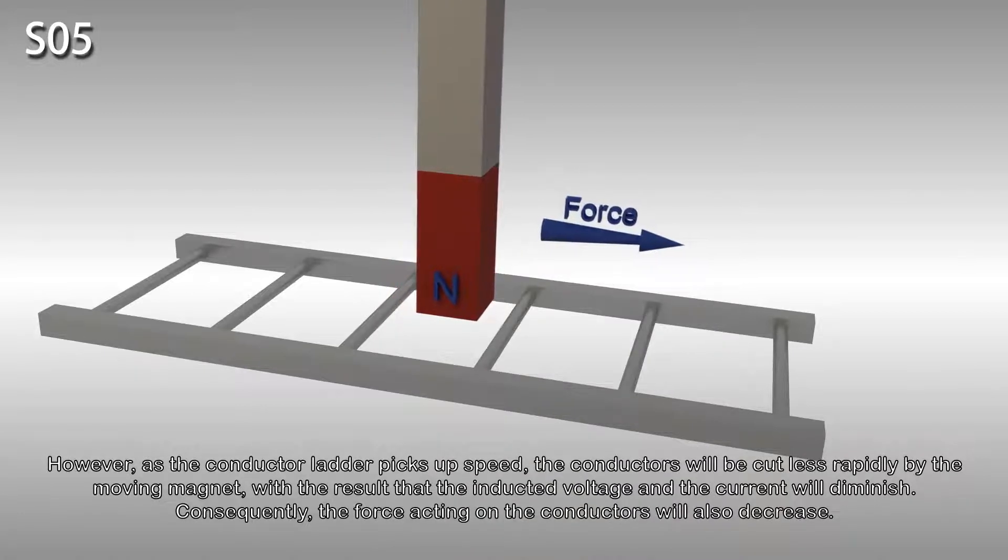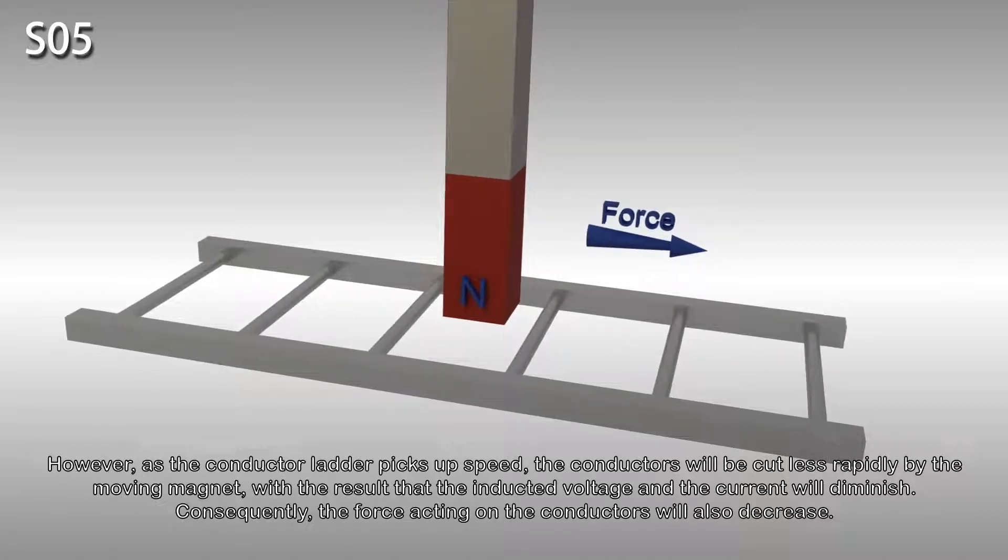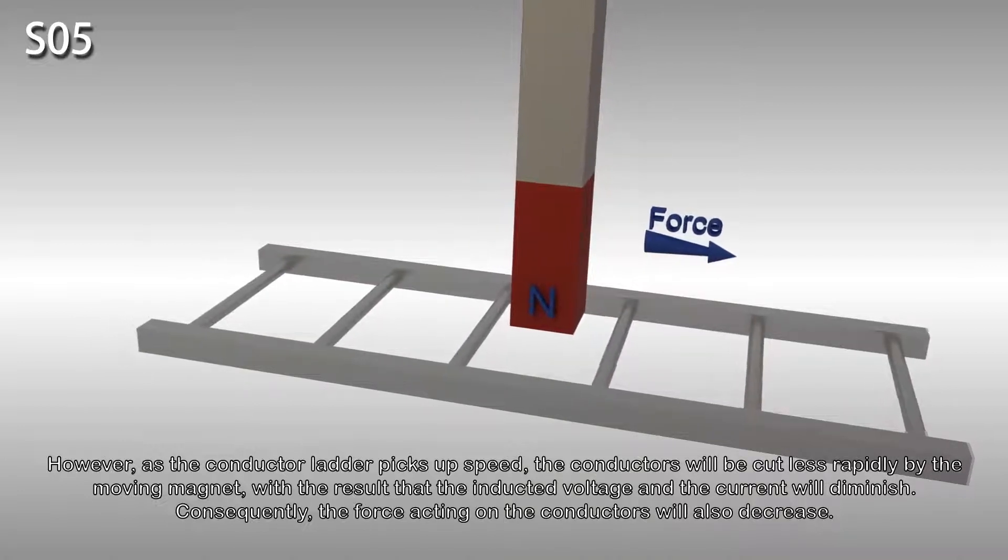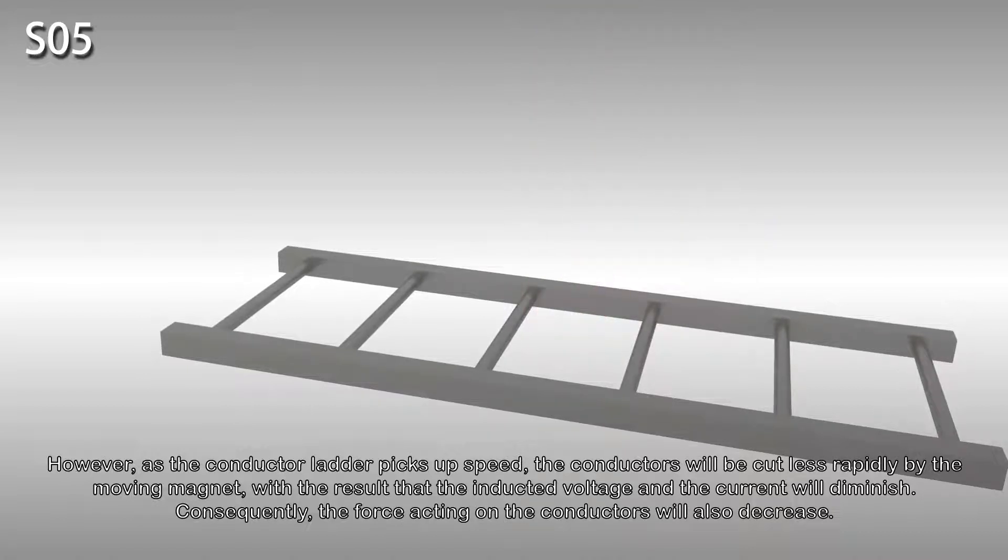However, as the conductor ladder picks up speed, the conductors will be cut less rapidly by the moving magnet, with the result that the induced voltage and the current will diminish. Consequently, the force acting on the conductors will also decrease.